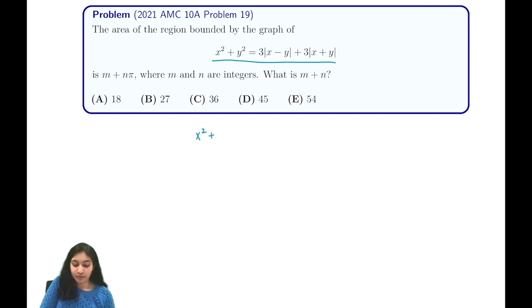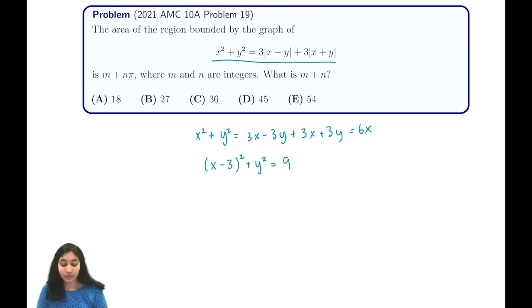If both of our absolute values are positive, we have x² + y² = 3x - 3y + 3x + 3y, which is just equal to 6x. We can complete the square and move this to the other side and see that this expression is equal to (x - 3)² + y² = 9. And for those of you who don't know, this represents the equation of a circle that has a center of (3, 0) and a radius of 3.